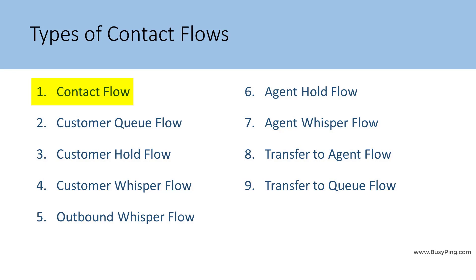So going forward, let's call this type as Generic Contact Flow or simply Generic Flow. Depending on the call flow scenario that you're building, you need to choose the appropriate type of contact flow. For example, if you want to build an inbound call flow, you need to use the Generic Contact Flow type. This is the only type that lets you link a phone number for inbound calling.